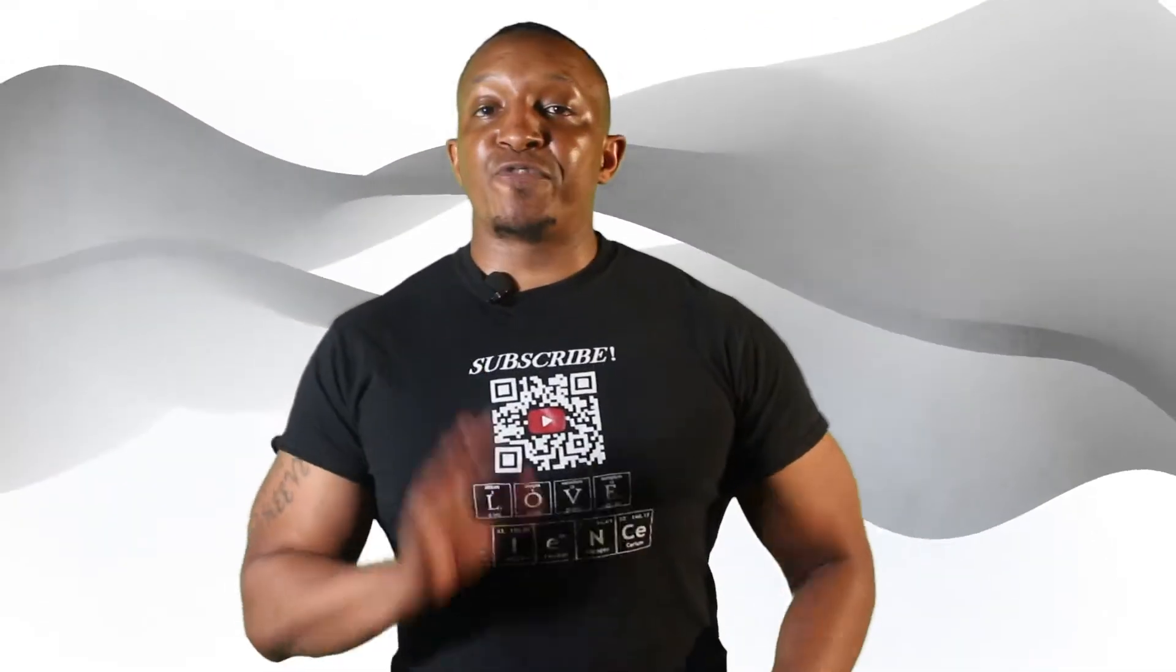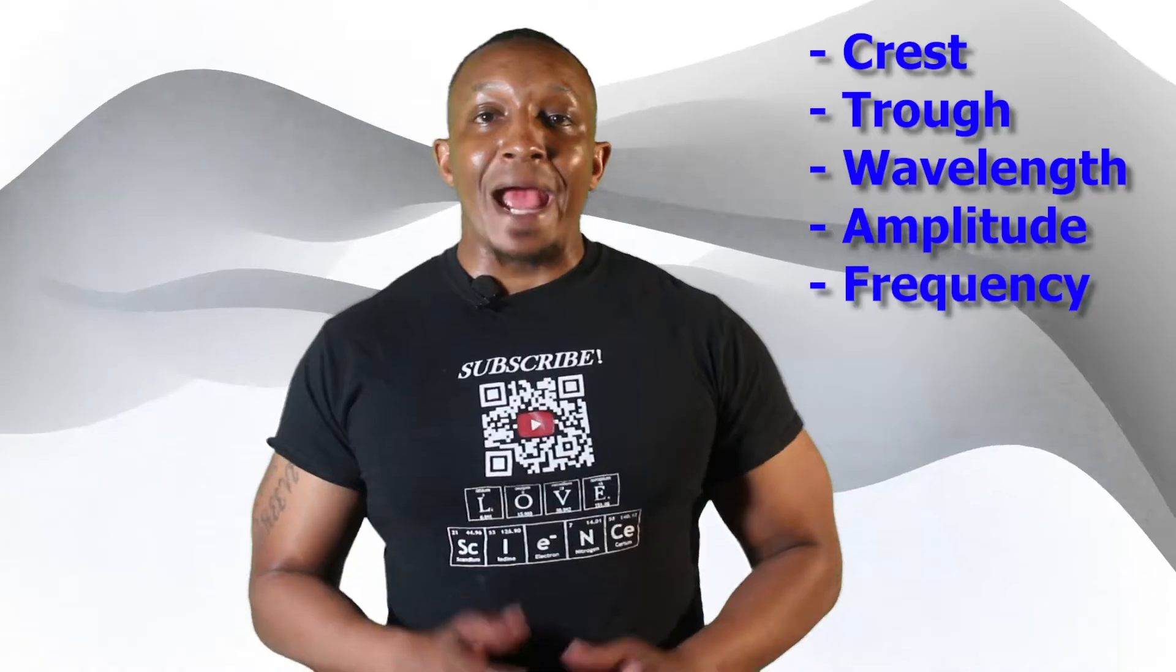All waves have five basic characteristics, which are crest, trough, wavelength, amplitude, and frequency. Let's go over some of these basic characteristics by analyzing the following electromagnetic wave.